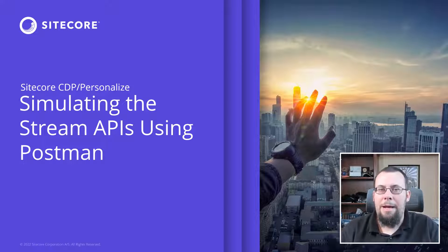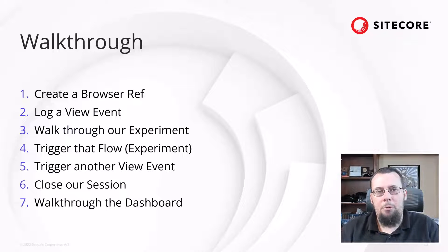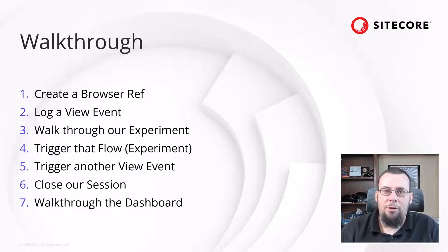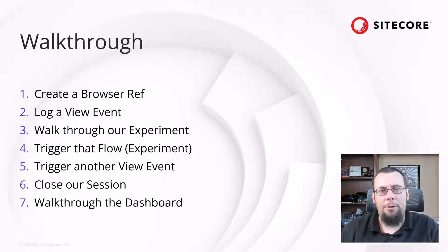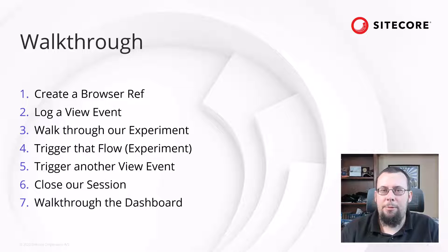We are going to walk through a manual exercise of triggering the complete flow of a web experiment using Postman. Specifically, I will demonstrate the following: we'll go through a browser ref or session create process — this is typically facilitated by the Sitecore CDP JavaScript library if you're using the browser. Then we'll log a simple page view event for the home page, essentially mimicking somebody coming to our home page.